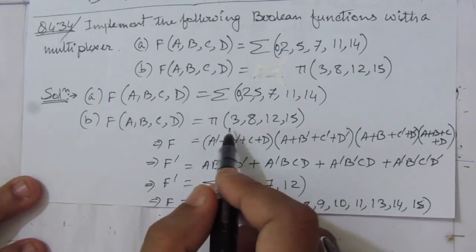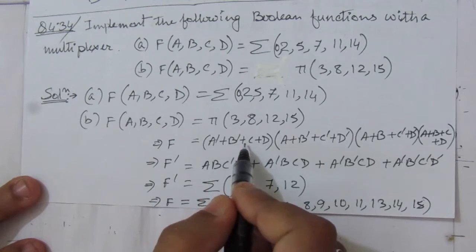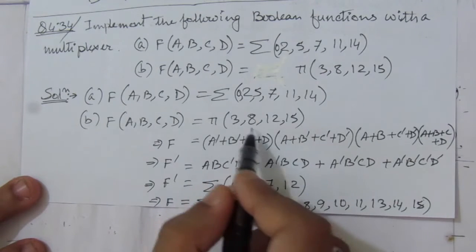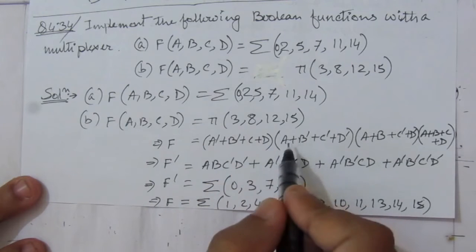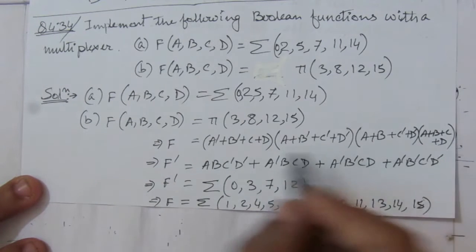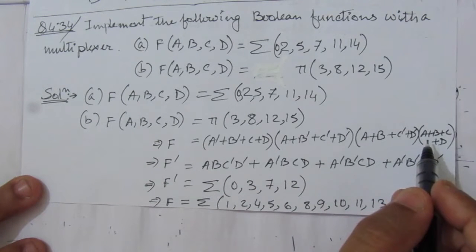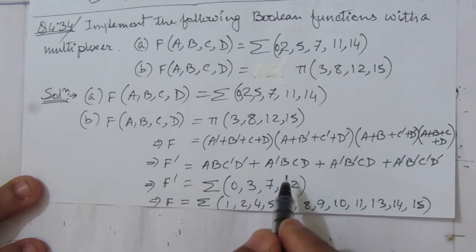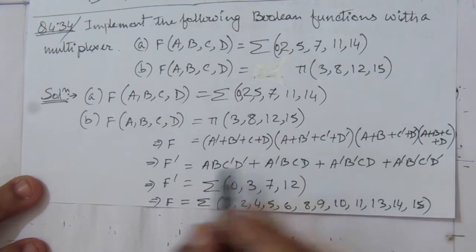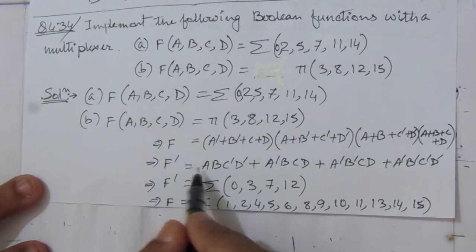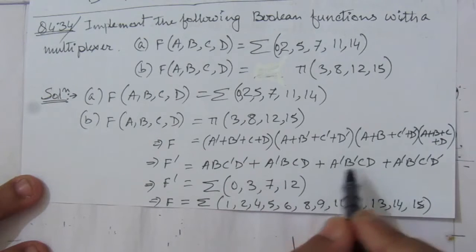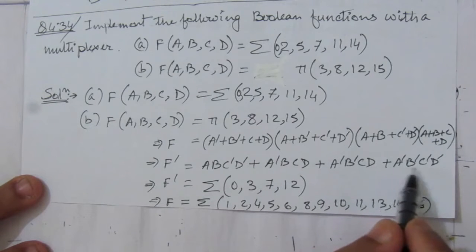We can expand each maxterm — for maxterm 3, we get A̅ + B̅ + C + D, meaning the binary combination is 0011, which equals 3. For maxterm 8, we get A + B̅ + C̅ + D̅, corresponding to 1000. So F complement expressed as a sum of products gives: A·B·C̅·D̅ + A̅·B·C·D + A̅·B̅·C·D + A̅·B̅·C̅·D̅.